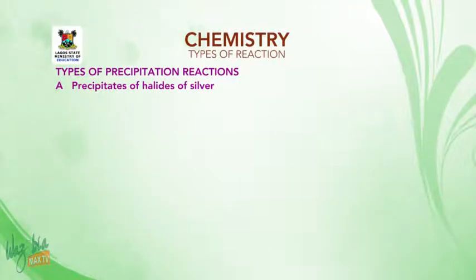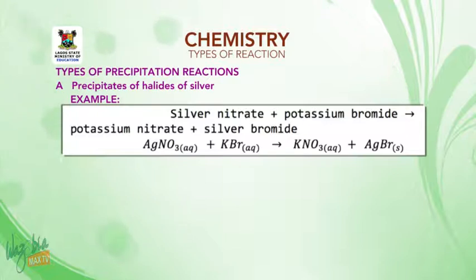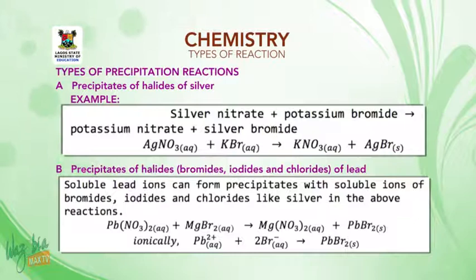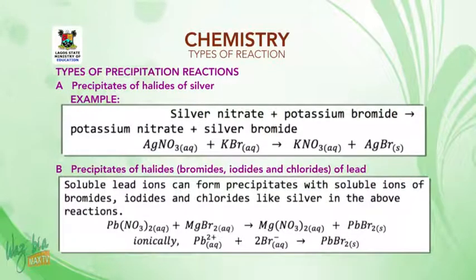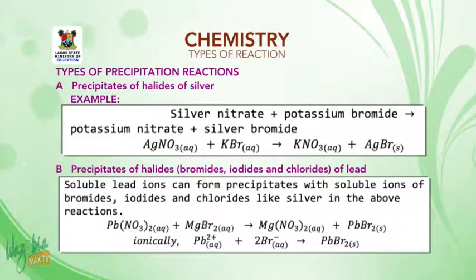Types of precipitate reactions. Number one: precipitate of halides of silver. For example, silver nitrate plus potassium bromide gives potassium nitrate and silver bromide solid. Another one is precipitate of halides of lead — soluble lead can form a precipitate with soluble ions of bromide, iodide, and chloride, similar to silver. For example, lead nitrate with magnesium bromide gives magnesium nitrate and a precipitate of lead bromide, shown ionically as Pb²⁺ + 2Br⁻ → PbBr₂.